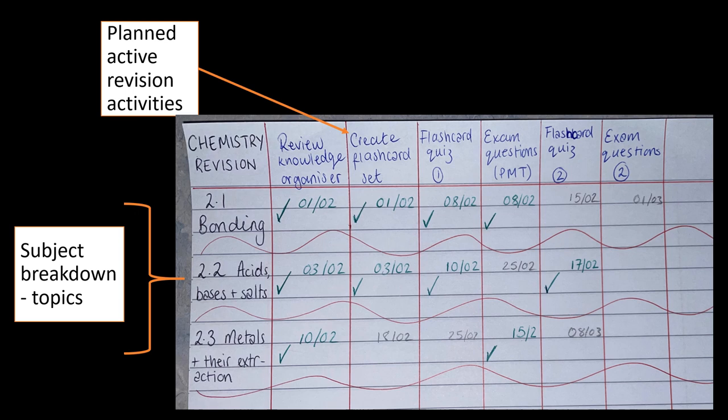Once you have that timetable you can then think about breaking this down to help fit in some of that interleaving and that spacing that we've mentioned. One of the things that I've always really liked to do when I've ever had to revise is to break down a subject into smaller chunks like topics. For example here with chemistry revision, you can break the subject down into the different topics such as bonding or acids, bases and salts and metals, and that would continue through the other topics. Then I would put those down the side in one column.